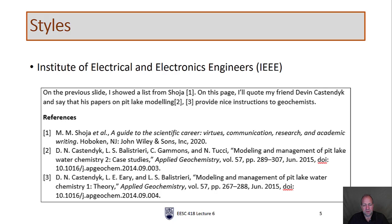The first of the two main types is the IEEE style. In the text on the previous slide showing a list from Shouja, I cited it in IEEE style with the number one in brackets. If you look at the reference list, all references are cited in the order they appear, following the number of the citation. I've also cited my colleague Devin and his papers on modeling — those are papers number two and three in the reference list.